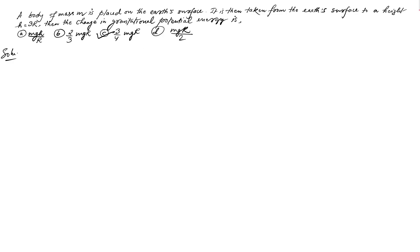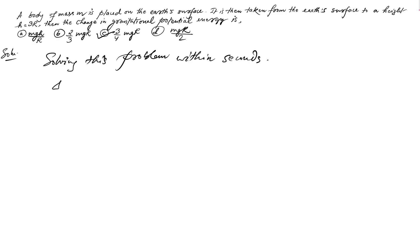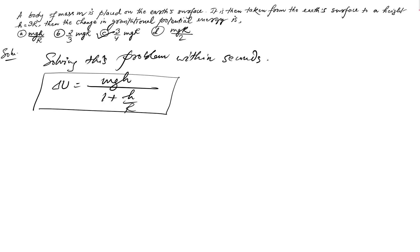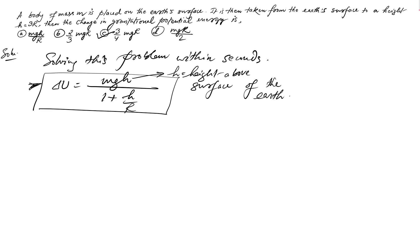The simple trick formula to solve this within seconds is: change in potential energy equals mgh divided by (1 + h/R). Just remember this formula and you're good to go. Here h is the height above the surface of the Earth, and R is the radius of the Earth.